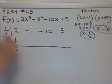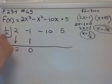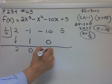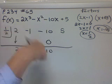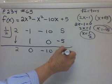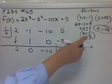Bring down the 2. Half times 2, 1. Add, I get a 0. Half times 0, 0. Add, I get negative 10. Half times negative 10, negative 5. Add, I get 0. And I knew I had to get 0 because they told me that was a factor.